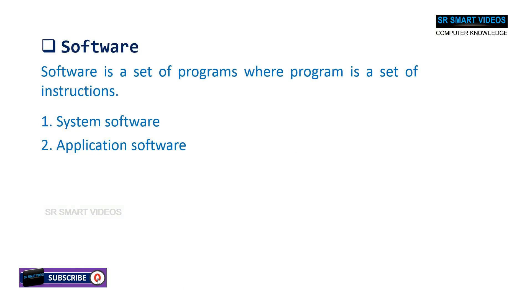Software is a set of programs, where a program is a set of instructions. Software can be divided into two types: system software and application software.